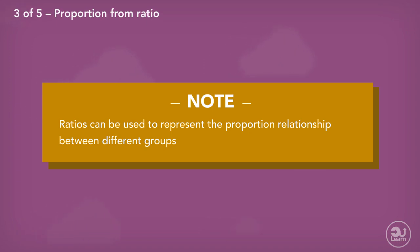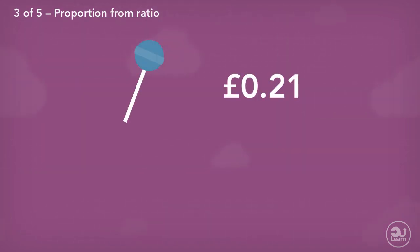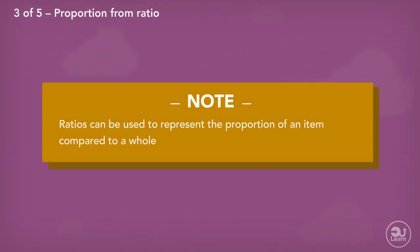Ratio can also be used to represent the proportion and how much something is worth. For example, if each sweet is worth 21 pence, we can write the ratio of sweets to cost as one to 21 pence.